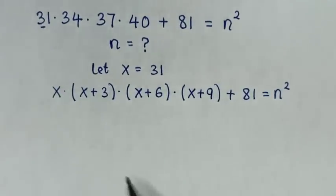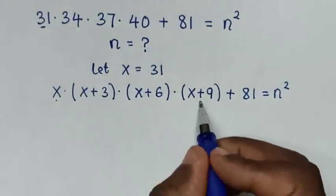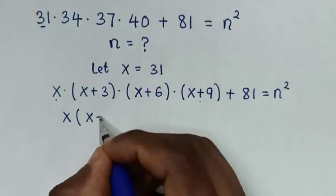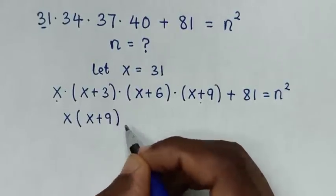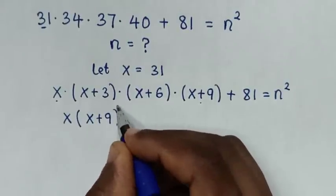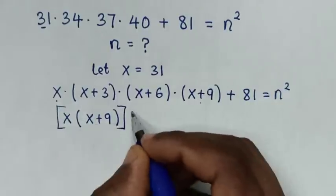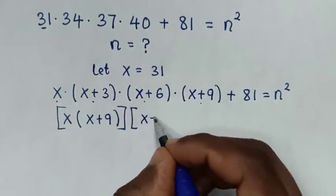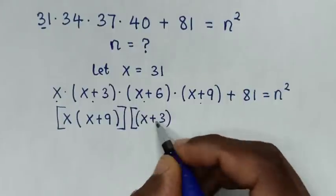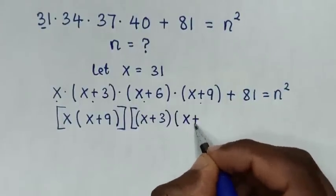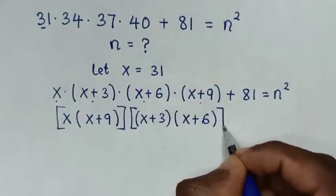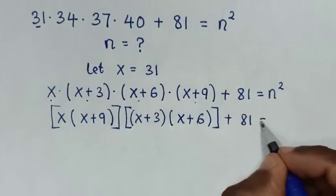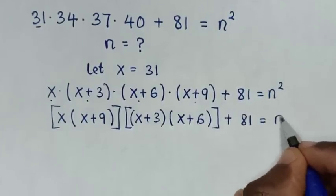In the next step, we rearrange by grouping: x times (x+9), then times (x+3) times (x+6), plus 81, equals n squared.